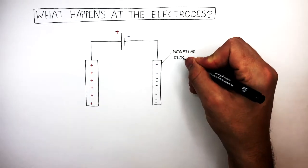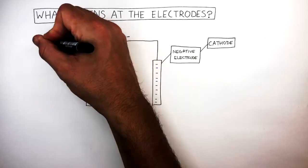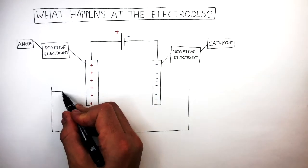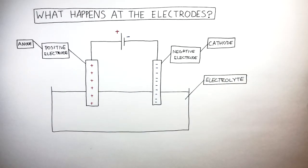The negative electrode is known as the cathode and the positive electrode is known as the anode. The two electrodes are dipped into a container containing the electrolyte. The electrolyte is the ionic compound being broken down by electrolysis.